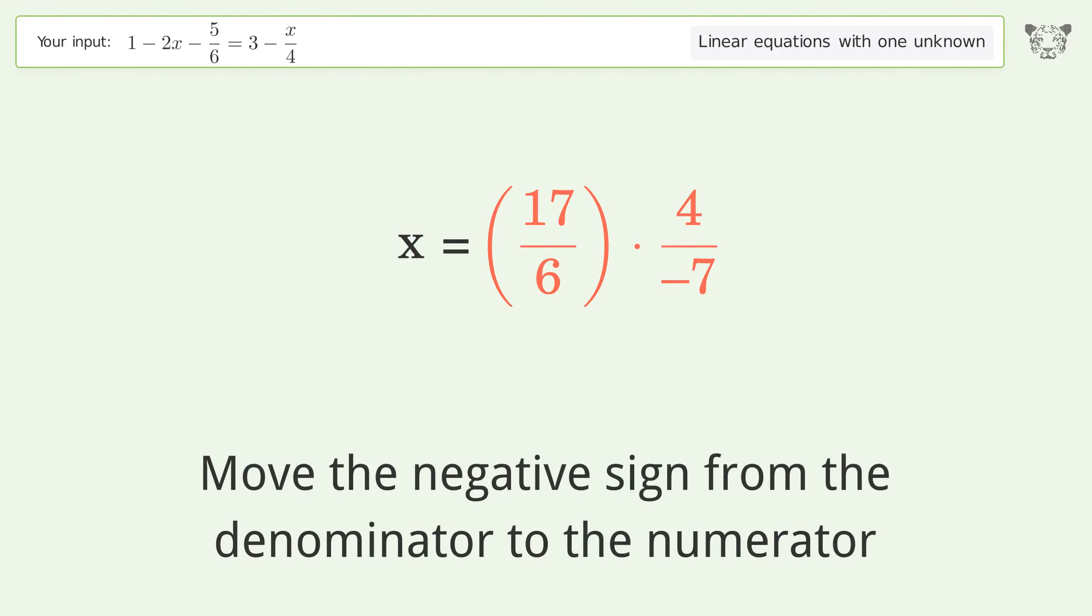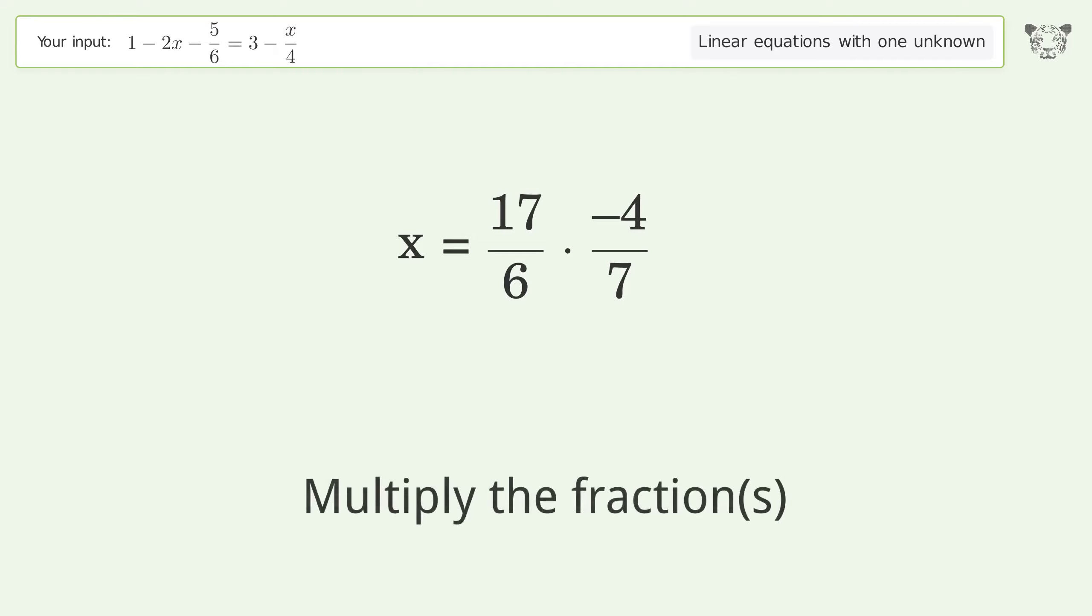Move the negative sign from the denominator to the numerator. Multiply the fractions. Simplify the arithmetic. And so the final result is x equals negative 34 over 21.